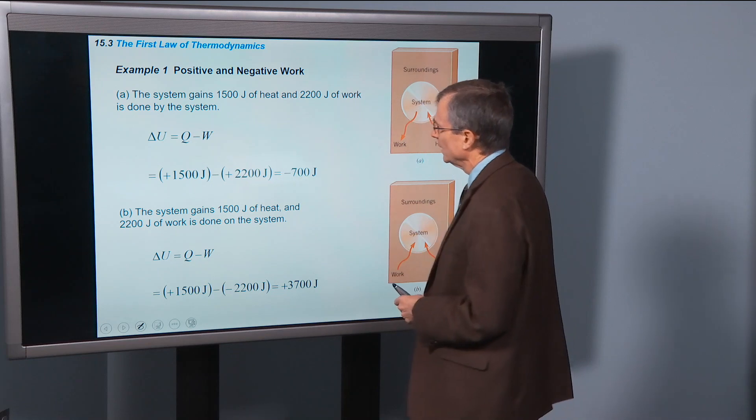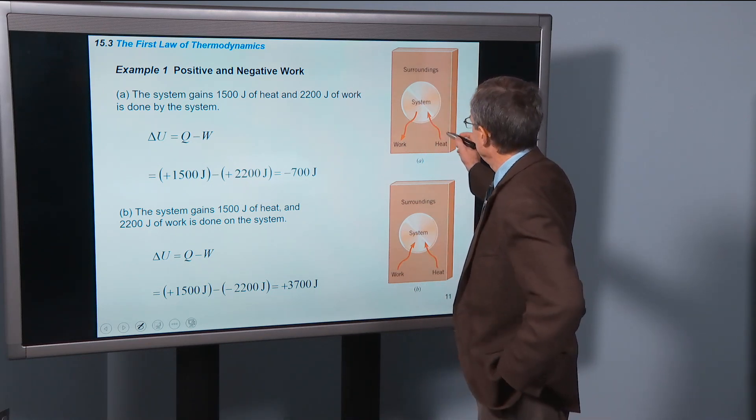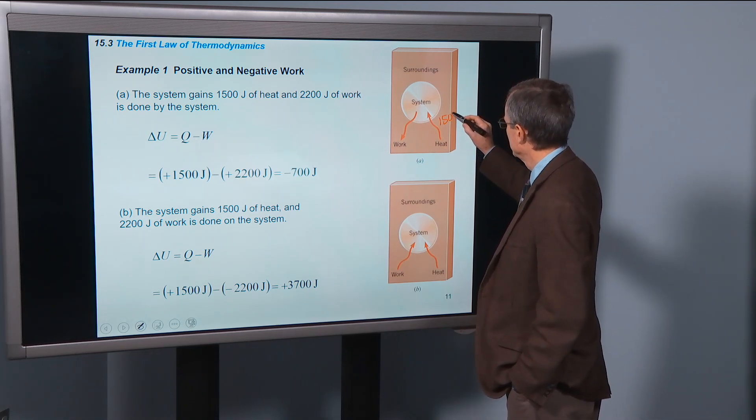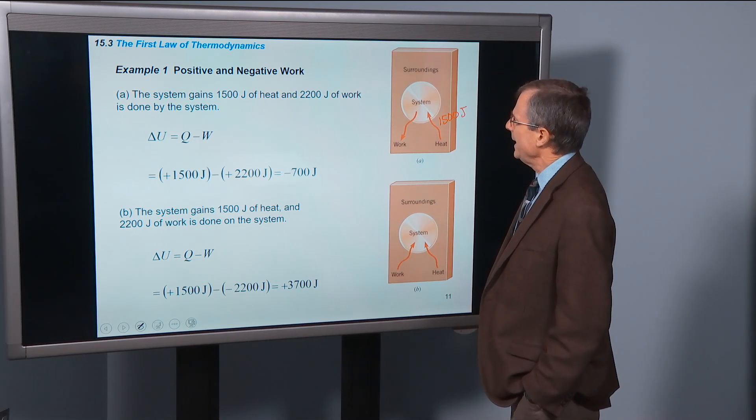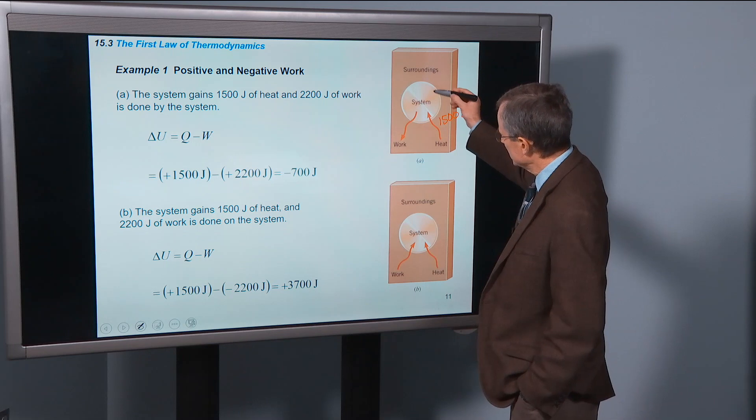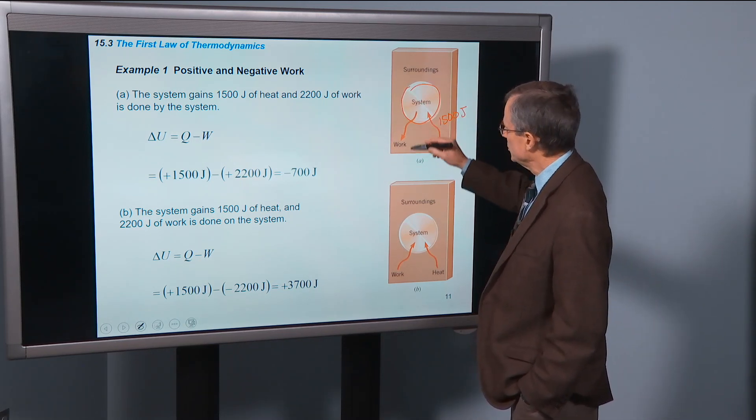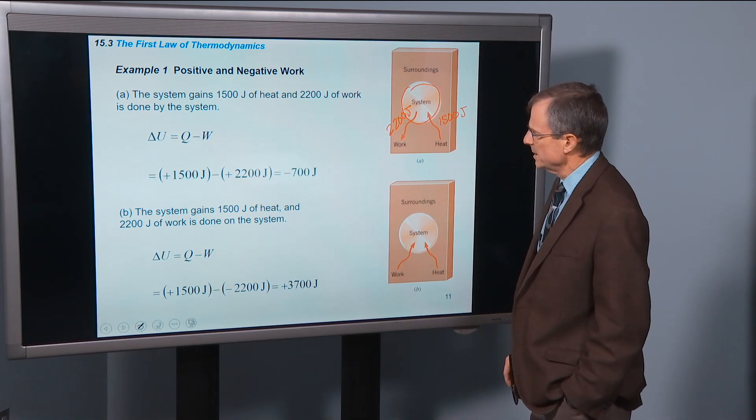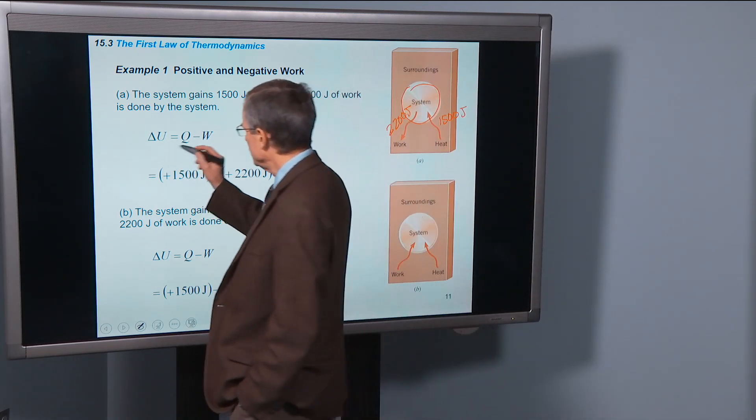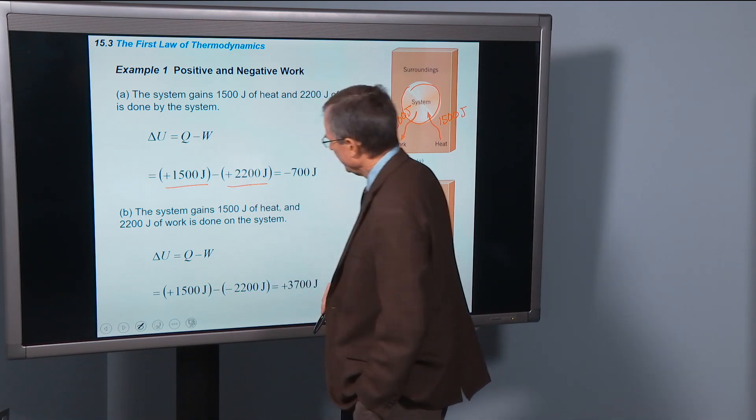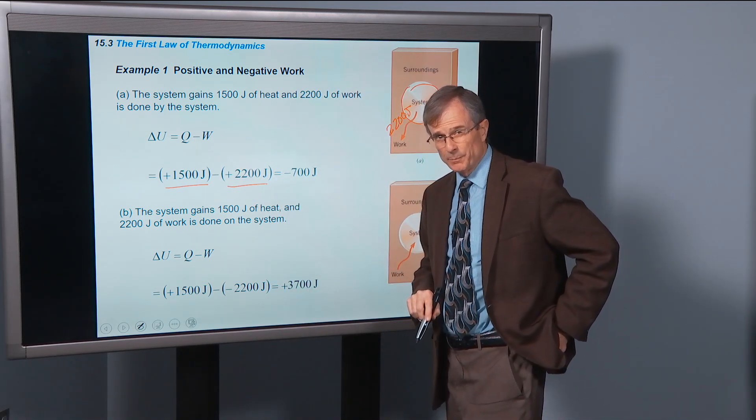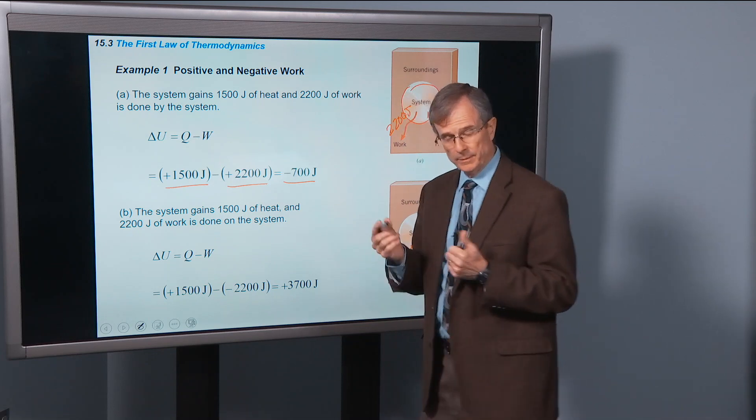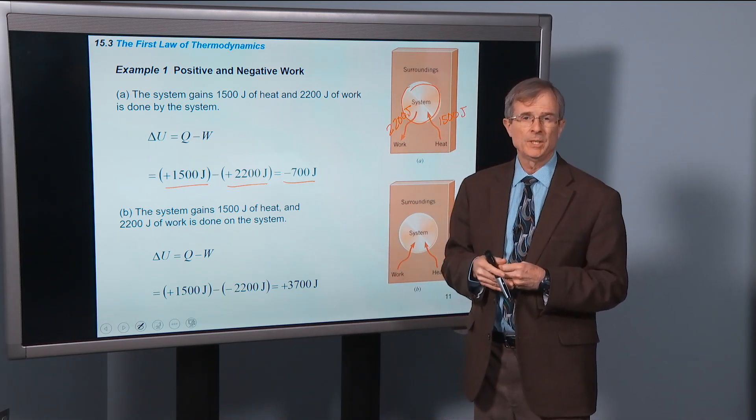Let's do an example. We've got a system in part a that gains 1500 joules of heat, and here's the system doing 2200 joules of work. What's the change in the internal energy? Delta U is Q minus W. Q is the heat added, 1500 joules. 2200 joules is the work done by the gas. Since the work done by the gas is greater than the heat added, there's a negative change in the internal energy.